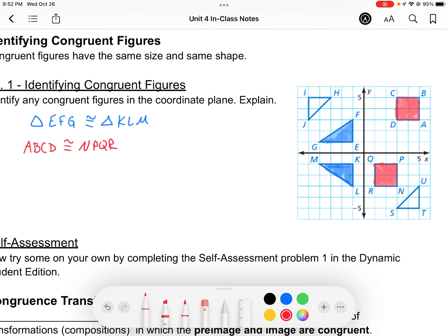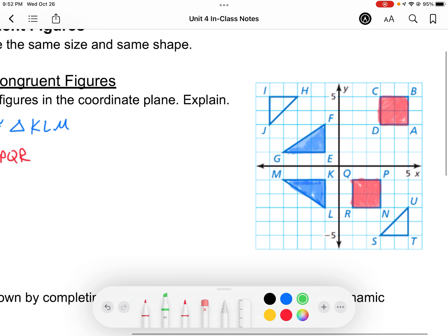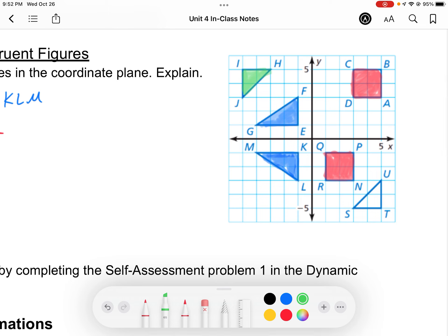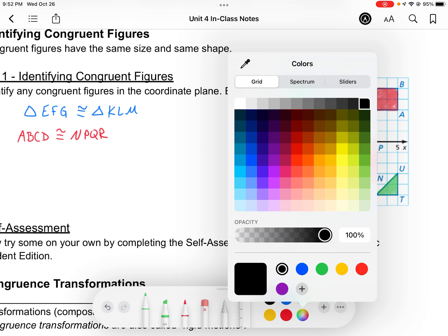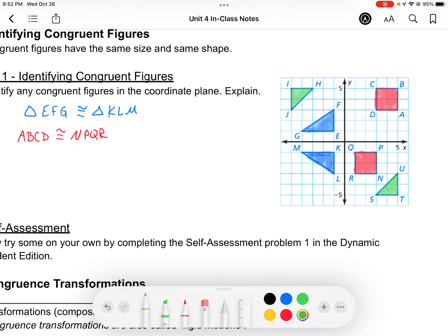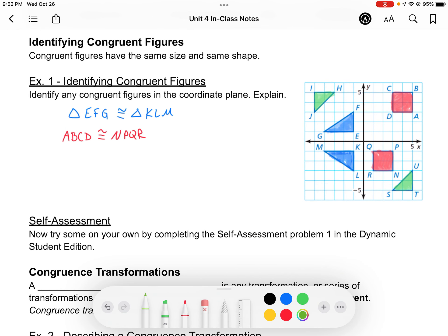And then finally, maybe you noticed these other triangles are actually congruent as well. Triangle IJH and this triangle are congruent. Actually, I'm going to change the way I name that. The top triangle, I'm going to name triangle HIJ. That has to be congruent to the other triangle STU, because those parts kind of match up together as well. That's how I would label those triangles and squares. We know they match up to one another.